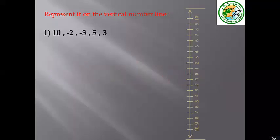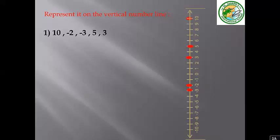For the vertical number line, we represent the numbers 10, negative 2, negative 3, 5, and 3. On the vertical number line, positive numbers are up and negative numbers are down.